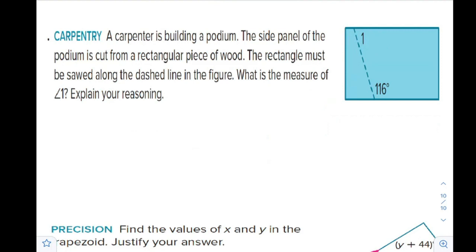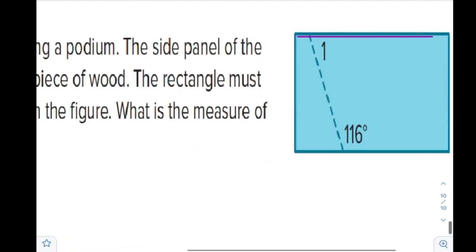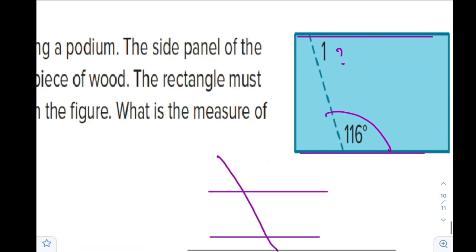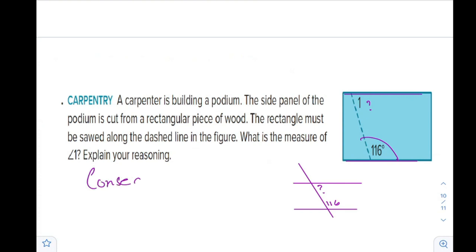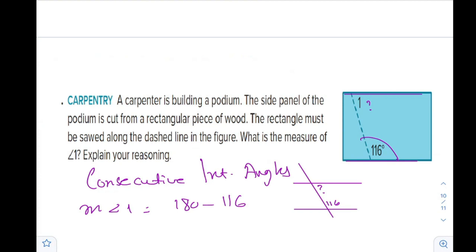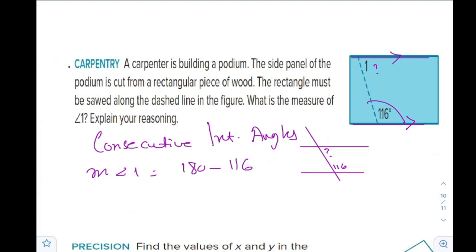A carpenter is building a podium. The side panel is cut from a rectangular piece of wood along a dashed line. We have two horizontal parallel lines — the top and bottom of the rectangle. The given angle is 116 degrees. Since the lines are parallel and these are same side interior angles, or consecutive interior angles, the measure of angle 1 is 180 minus 116, which is 64 degrees.